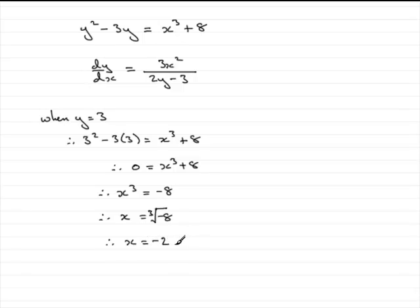Now that we've got x is minus 2, we know that y is 3, we can therefore substitute this into dy by dx and we get 3 times minus 2 all squared, divided by 2 times y take 3, so that's 2 times 3 take 3. Work this out and what you've got is 4.